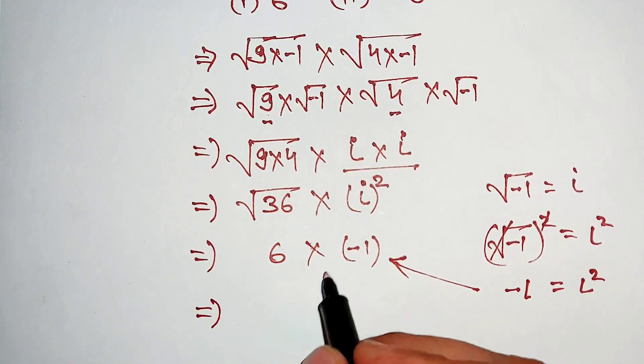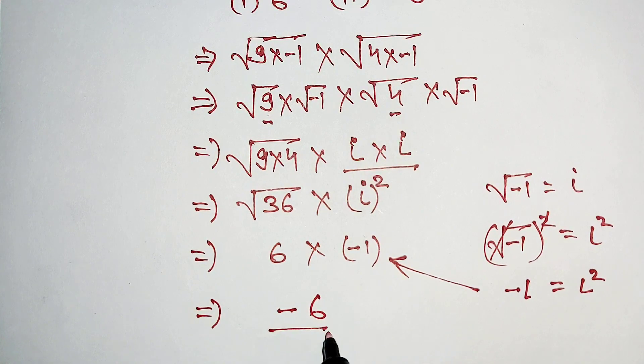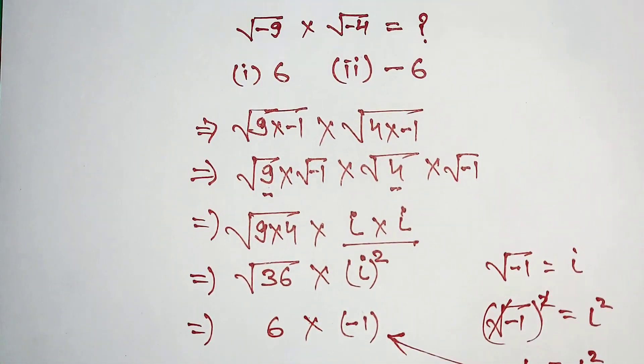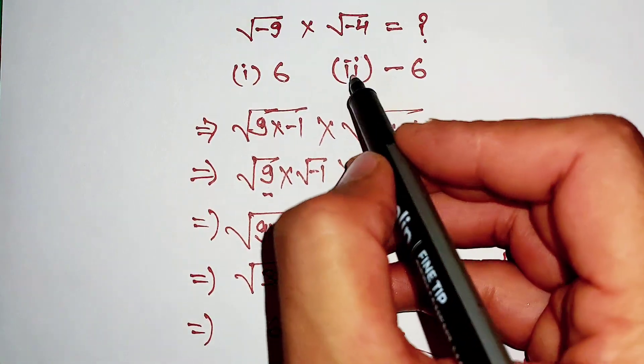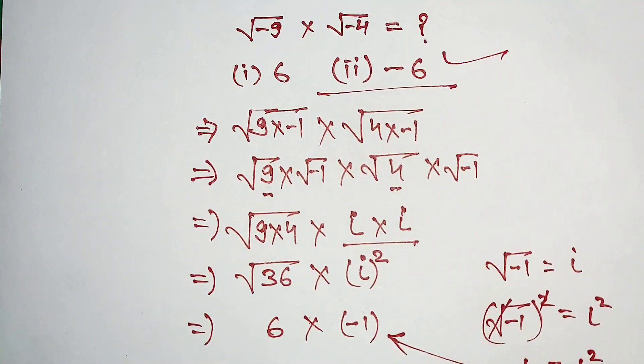Now 6 multiply negative 1 is equal to negative 6. That's why our answer is negative 6.